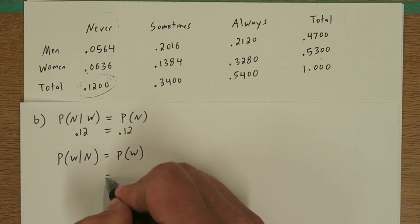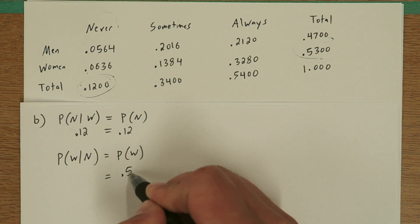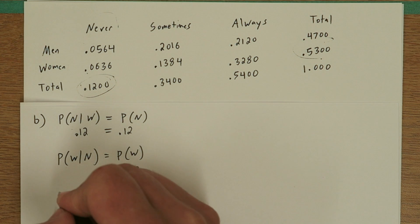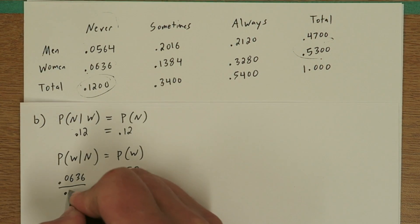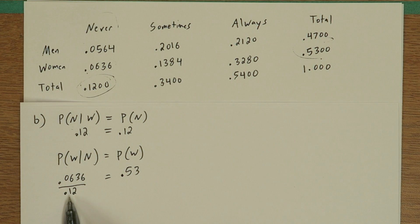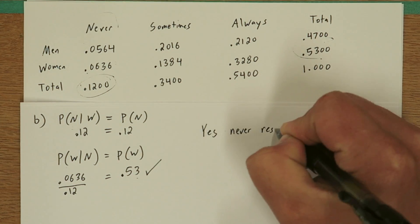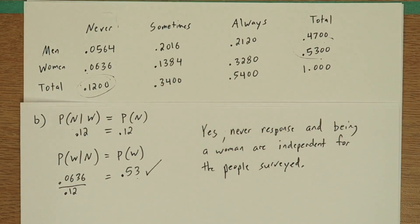We already know the probability of woman, that's .53. So the probability of woman given never, using that formula sheet again, we can see that that's the probability of woman and never, or this probability here, divided by probability of never. And it turns out, when you divide those, you do in fact get .53. So, are they independent? We'll say yes. Never response and being a woman are independent for the people surveyed.